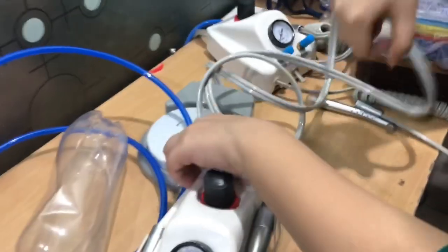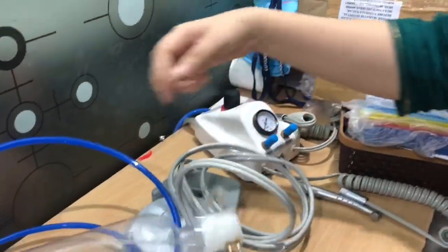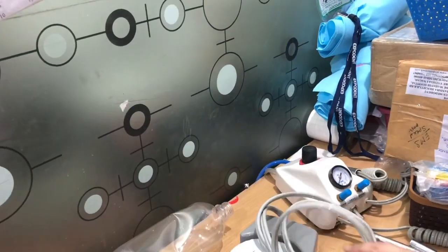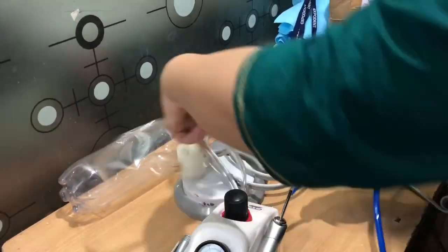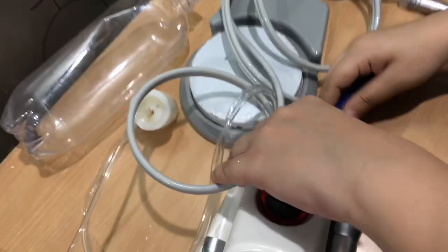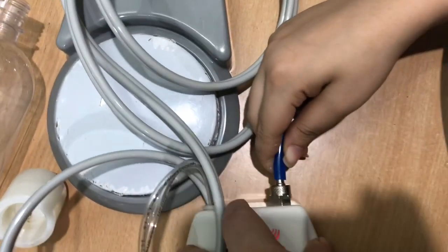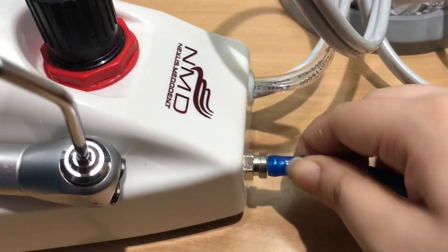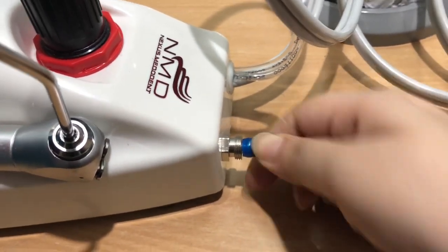This is the part which you need to place here like this. You have to remove this first and then you have to push this tube in the air inside this. And then you can see it already gone inside and then you need to rotate this like this.